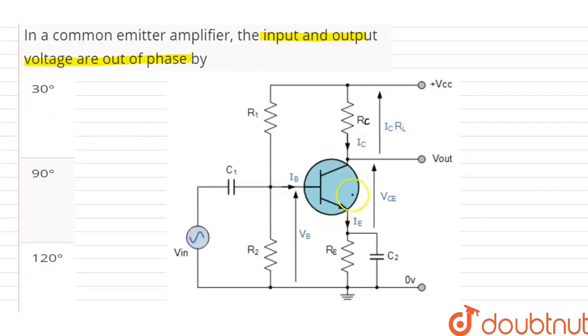In a common emitter configuration, when the base current IB increases, the collector current IC also increases. As the collector current increases, the drop in collector resistance RC increases.